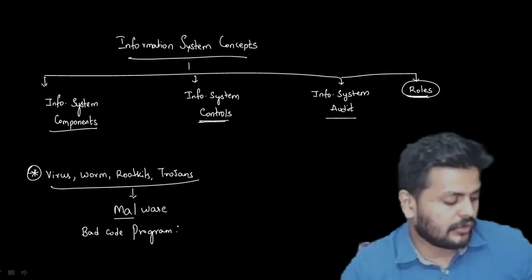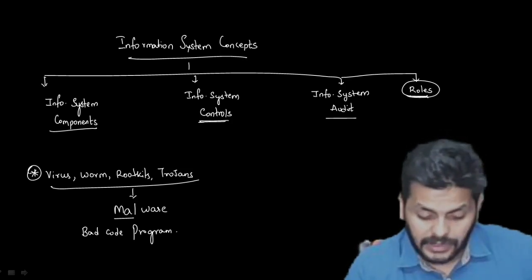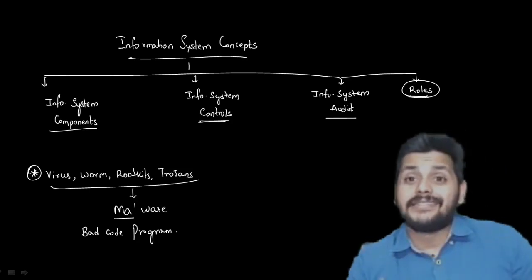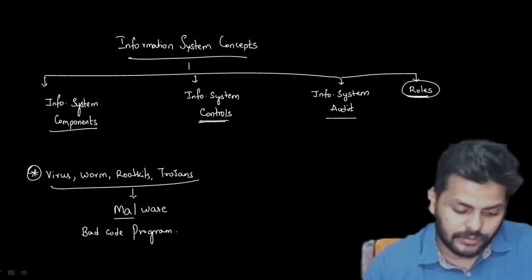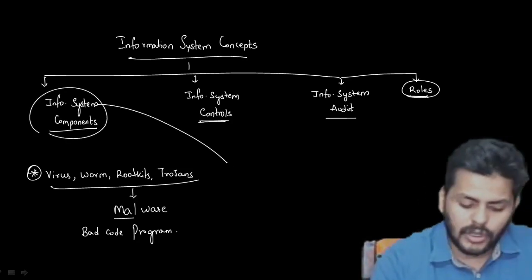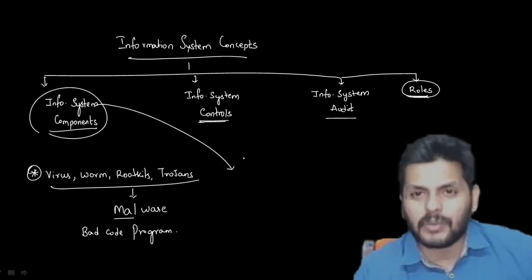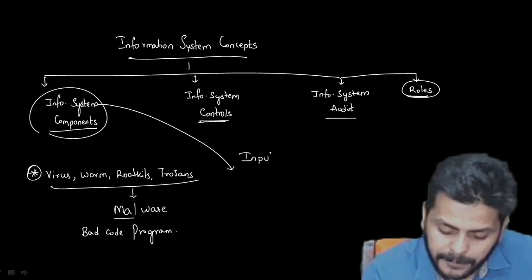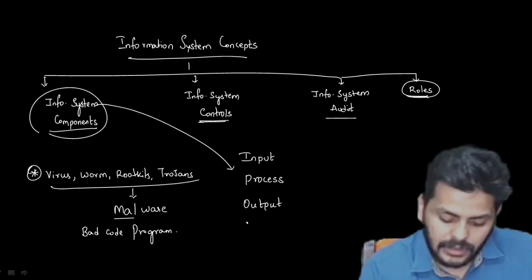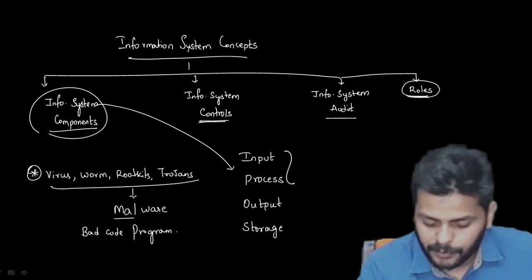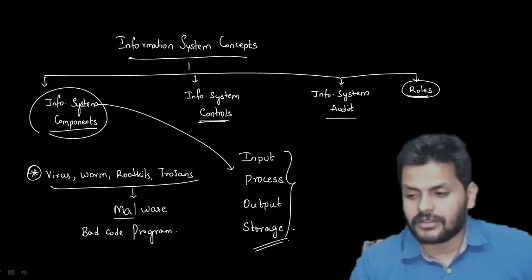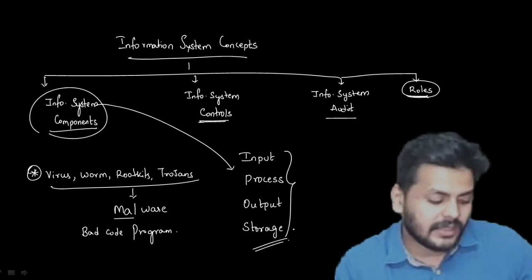Now cutting down to information system components — we will look at all six branches involved. Before we discuss anything, we should know how an information system works. Computers or information systems take input, process that input, deliver output, and store data. So input, process, output, and storage are the four functions of an information system.